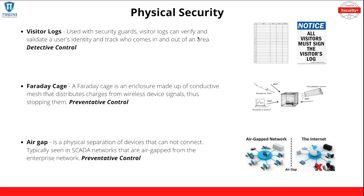Other forms of physical security — the last slide covers visitor logs, which are used with that reception desk or security guards as a way to validate a user's identity. A Faraday cage is an enclosure made up of conductive mesh that distributes charges from wireless device signals, thus stopping them — pretty much stopping signal from coming in. Air gap is a term that describes the physical separation of devices that cannot connect. You see this a lot with SCADA or ICS networks — industrial networks and enterprise. That physical air gap network should also be the standard for your CCTV system, which should be completely segmented and separate with no cross-boundaries between your enterprise.